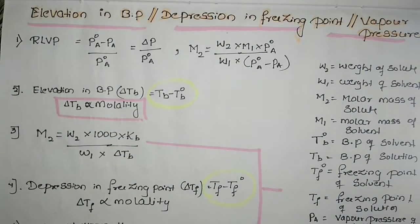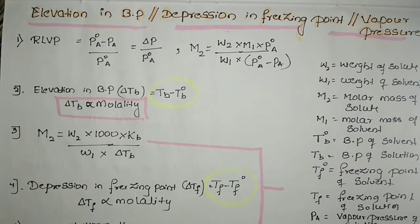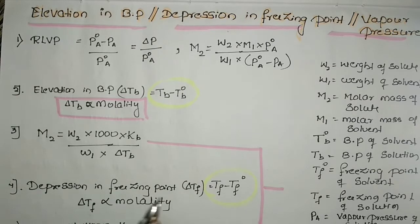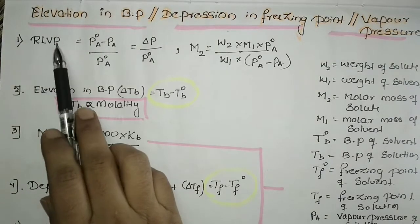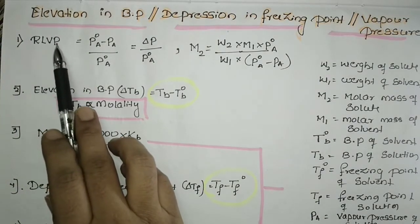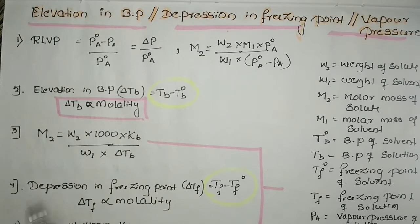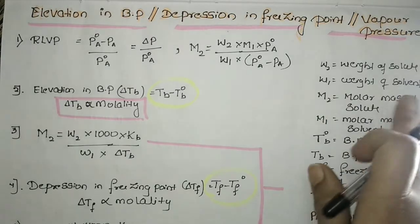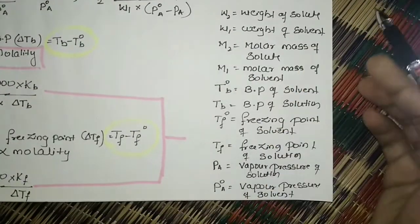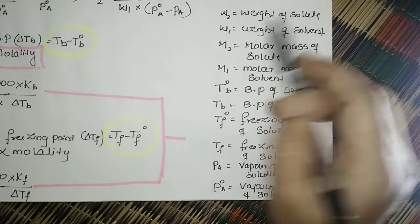I have made a list of the formulas here, and I'll give you an easy method to remember, practice, and memorize them while doing problems in the exam. The first property is relative lowering of vapor pressure, abbreviated RLVP. Similarly, elevation in boiling point is represented by delta Tb, depression in freezing point by delta Tf, and next we will discuss osmotic pressure. But before that, these notation points are compulsory to remember.